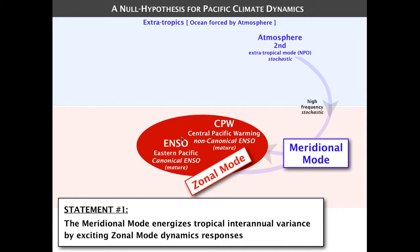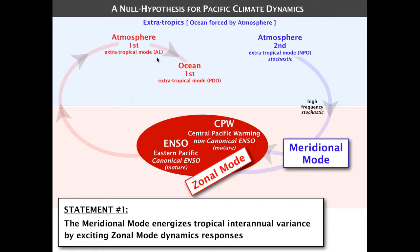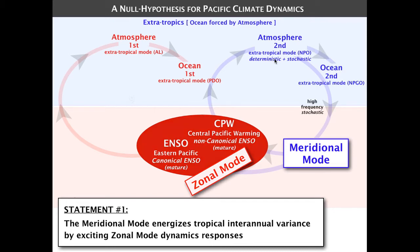We also know that these two flavors of tropical variability have important teleconnections to the extratropics — for example, to the Aleutian Low for the typical El Niño, as pointed out by Michael Alexander. This atmospheric variability also has an oceanic response in the Pacific Decadal Oscillation. People have discussed the PDO as a reddening of the ENSO spectra — work by Matt Newman and Niklas Schneider. We also know from recent work that the Central Pacific warming pattern has teleconnections to the NPO, driving a deterministic fraction of the NPO variability, mostly at low frequency, which is then integrated into the North Pacific Gyre Oscillation.